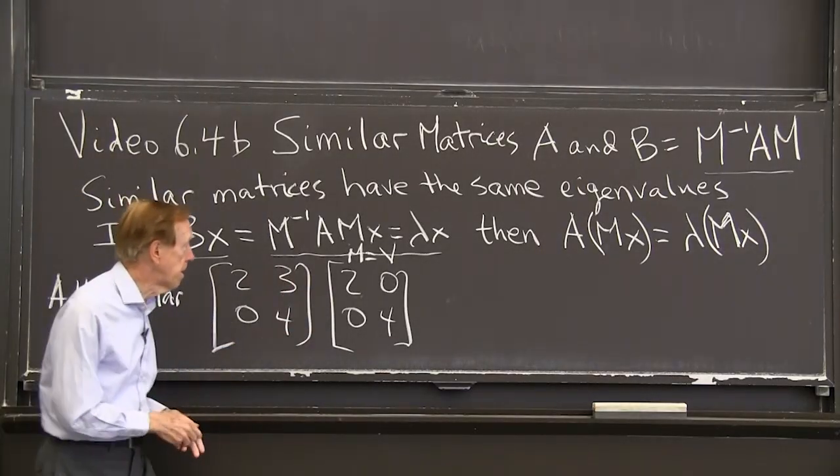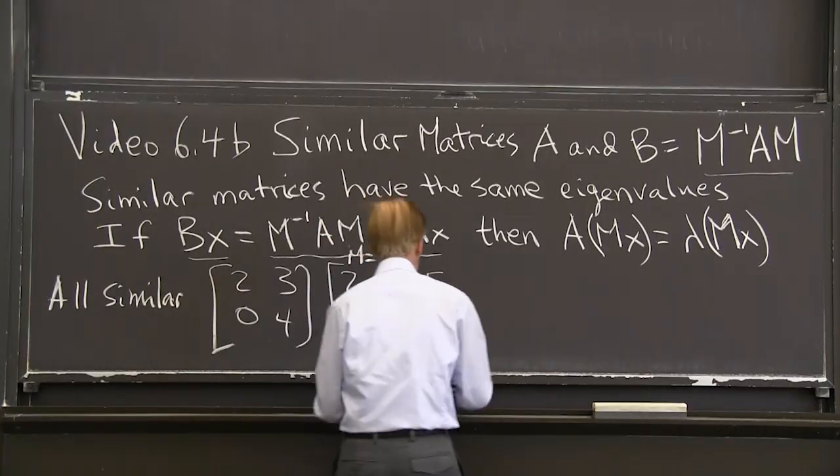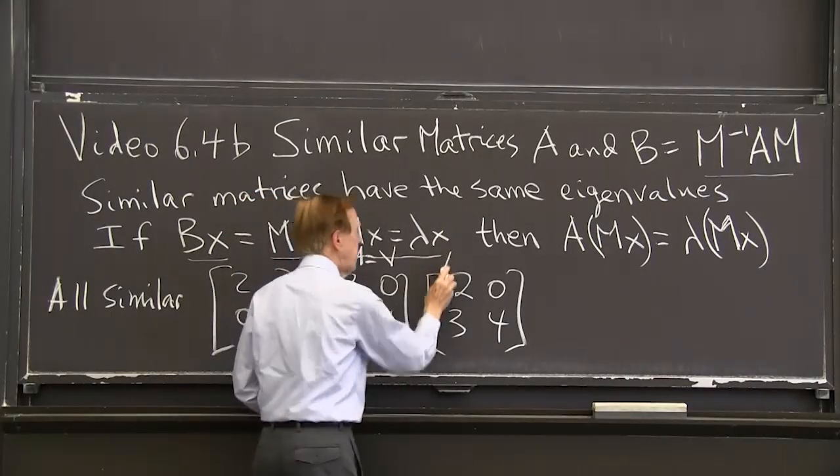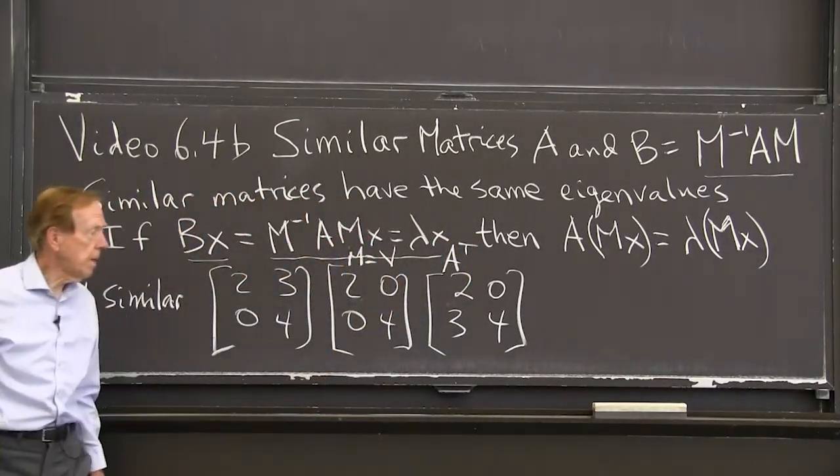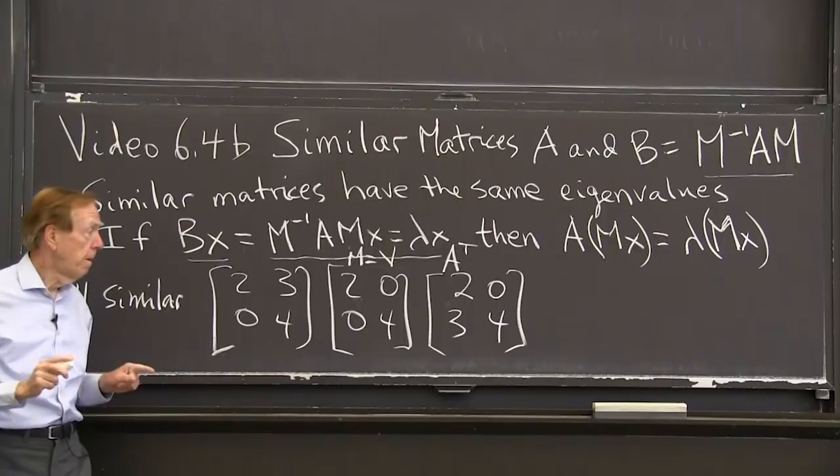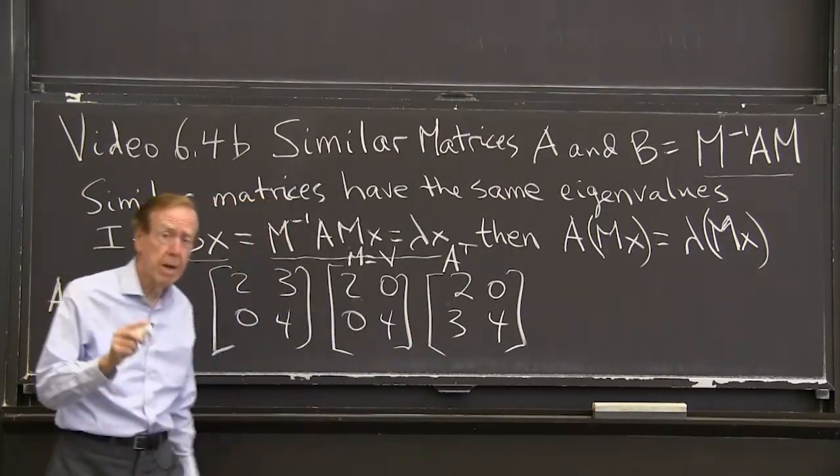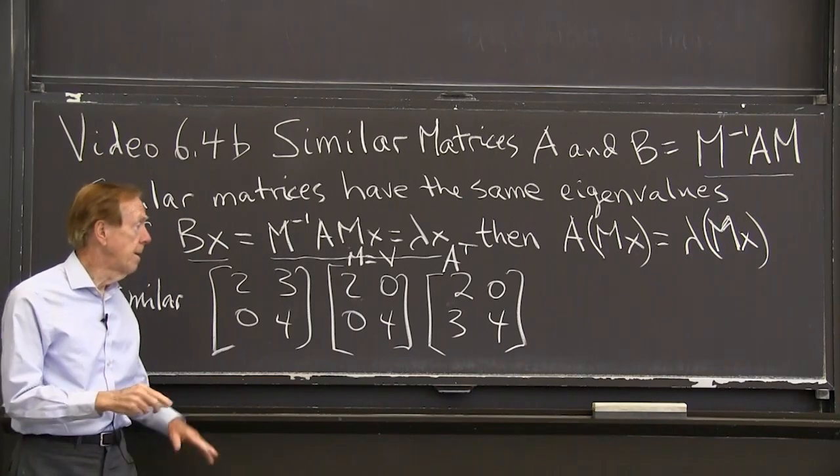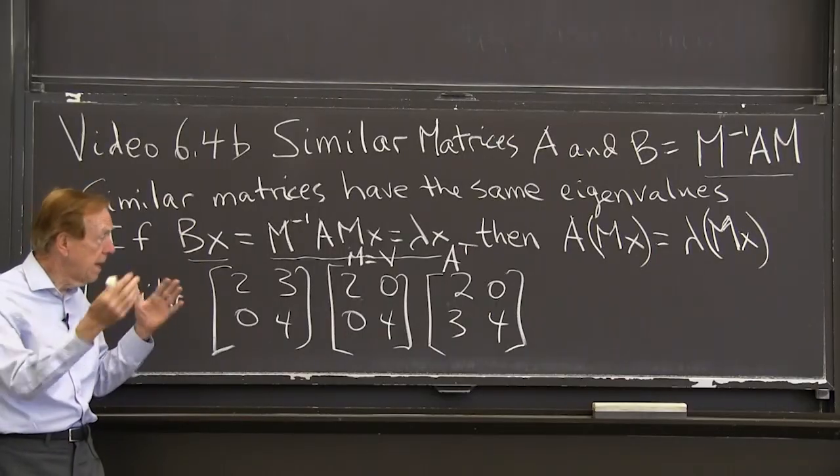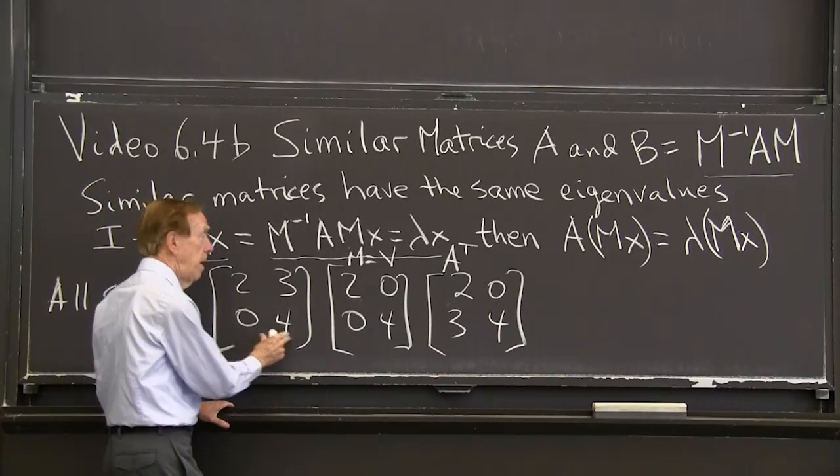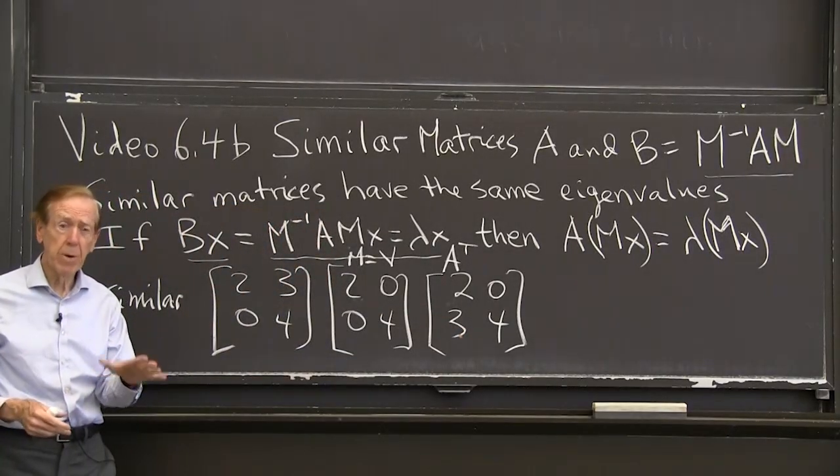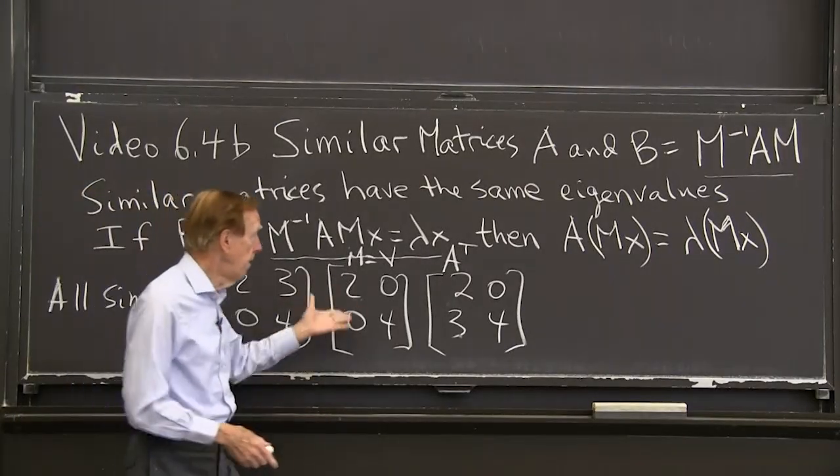But there are other possibilities. So let me see. I could, I think probably a matrix is, there's the matrix A transpose. Is that similar to A? Is A transpose similar to A? Well, answer yes. The transpose matrix has those same eigenvalues two and four. And different eigenvectors. And those eigenvectors would connect the original A and this A, or that A transpose. So the transpose of a matrix is similar to the matrix.